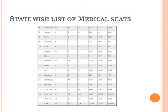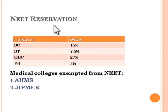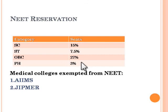Now we will see the reservation pattern. OBC reservation is 27 percent, SC is 15 percent, and ST is 7.5 percent. Physically handicapped candidates have 3 percent reservation. Physically handicapped candidates must obtain a certificate from prescribed medical hospitals such as MMC in Chennai and AIIMS in New Delhi.